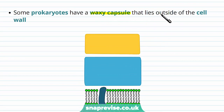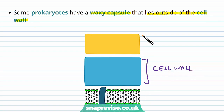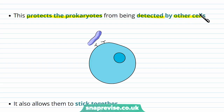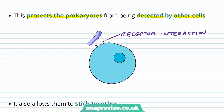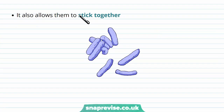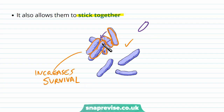Some prokaryotes have a waxy capsule that lies even further outside of the cell wall, giving extra protection. The waxy capsule can help protect the prokaryote from being detected by other cells — usually our own cells detect pathogens through protein interactions with receptors, but if the pathogen has a waxy capsule it can block this interaction so the cell doesn't recognize it as a foreign particle. Capsules are also important because they allow bacteria to stick together in groups, enabling them to share nutrients, share genetic material, and have a better chance of surviving.